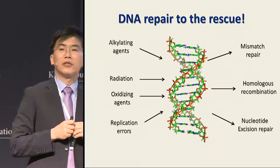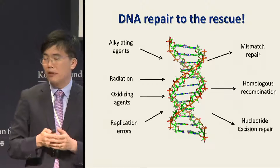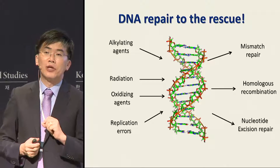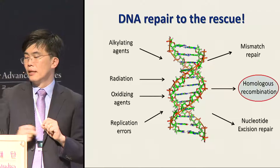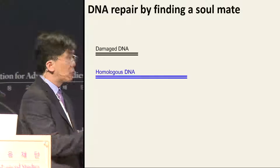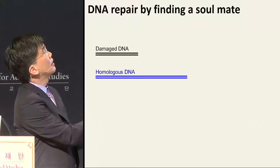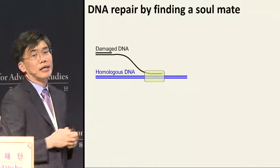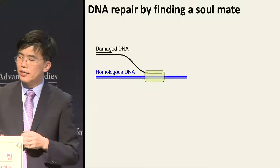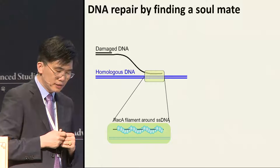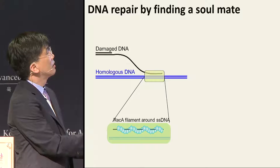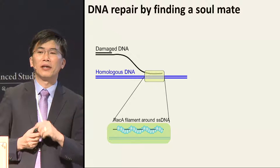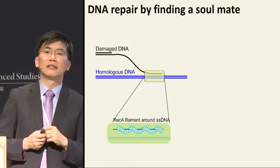Luckily, we have DNA repair coming to the rescue. There are protein-based nanomachines that can help repair DNA damage. I want to mention one mechanism called homologous recombination. Here, a DNA break produces a single-stranded DNA that eventually finds a matching sequence in another DNA inside the cell to start the repair process. This is carried out by a protein called RecA in bacterial cells, which forms a filament that then finds the matching sequence. Even in a small bacterial cell you have several million base pairs of DNA, so how do you find the correct sequence quickly enough?